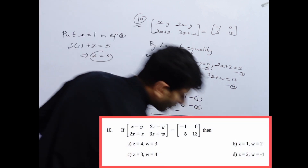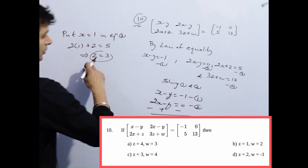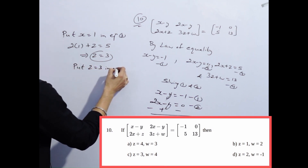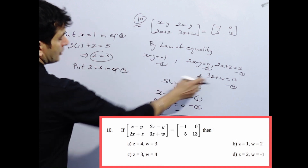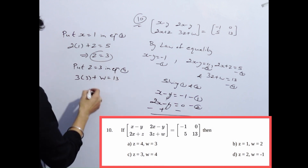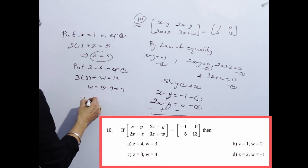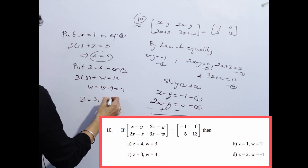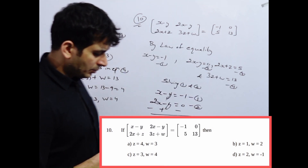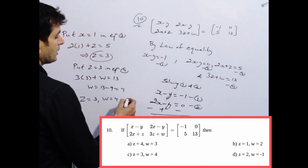तो right answer option C होगा. अगर आप w भी find करना चाहते हैं, तो put z equal to 3 in equation 4: 3 into 3 plus w equal to 13, तो w equal to 13 minus 9 equal to 4. So z=3 and w=4, that is option C.